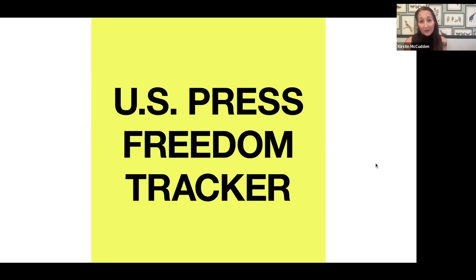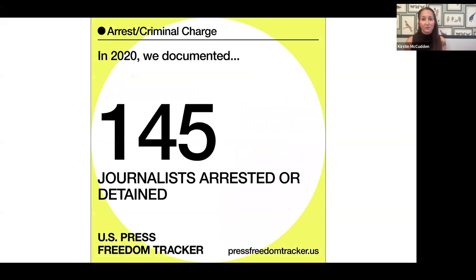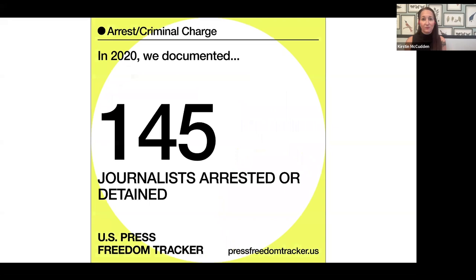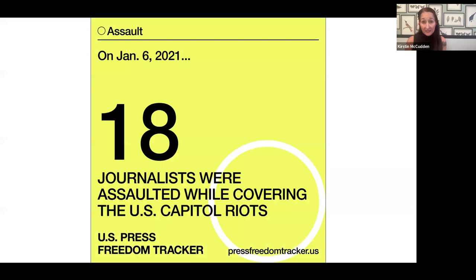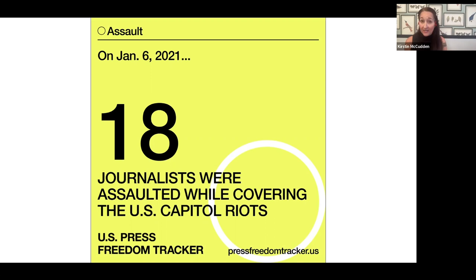We're going to tell you about the U.S. Press Freedom Tracker. This is a project of Freedom of the Press Foundation launched in 2017, so we're in our seventh year of documentation. The site itself is a database — a news database that collects virtually every press freedom violation in the U.S. That means journalists reporting and being arrested, journalists assaulted while doing their work, receiving a subpoena for private confidential source information or for testimony. We track across nearly a dozen categories across the United States.